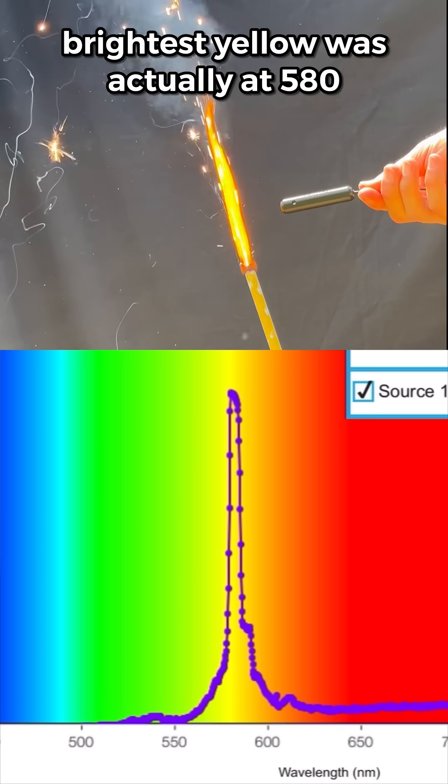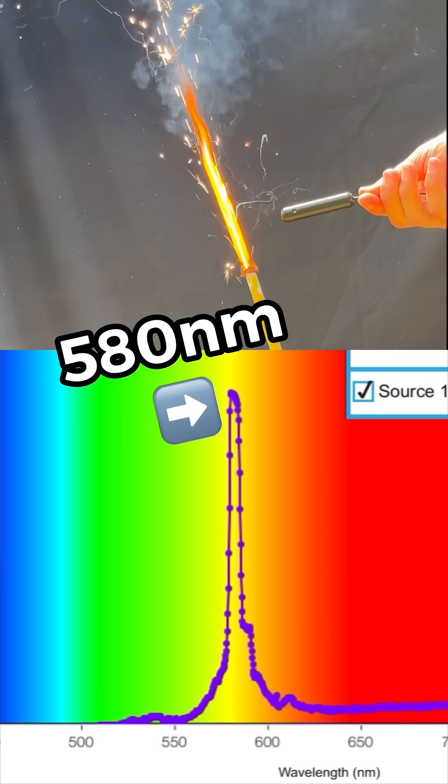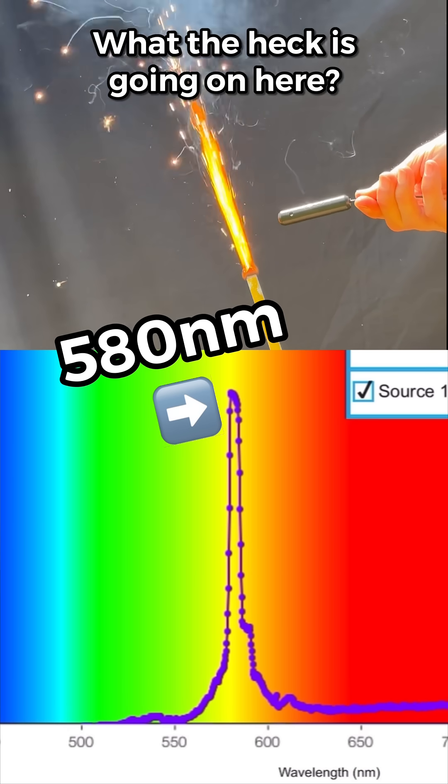But I was confused that the brightest yellow was actually at 580 nanometers. Sodium doesn't emit at that wavelength. What the heck is going on here?